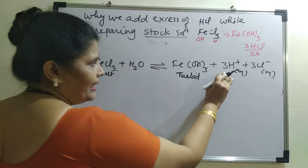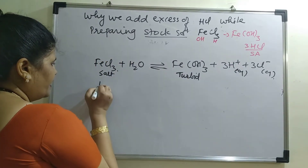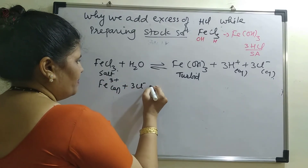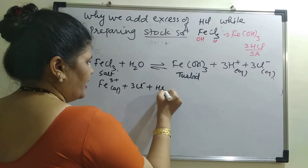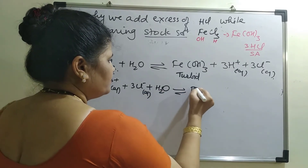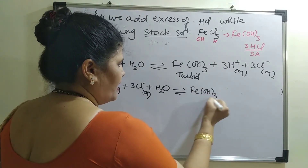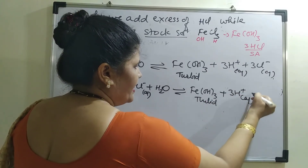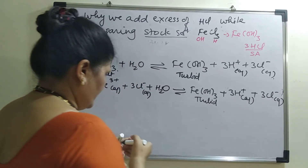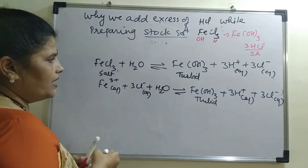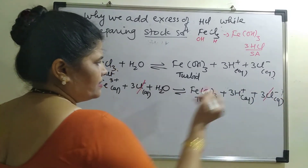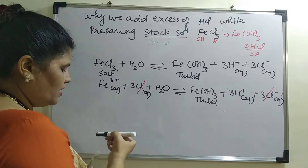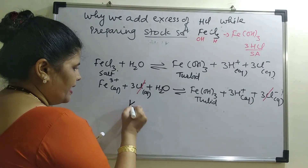Writing out the ionic forms: Fe³⁺ (aq) and 3Cl⁻ (aq) plus H₂O give Fe(OH)₃ (turbid) plus 3H⁺ (aq) and 3Cl⁻ (aq). After cancelling the common ions, the equilibrium expression K involves the active mass of Fe(OH)₃, H⁺ ions, Fe³⁺, and water.